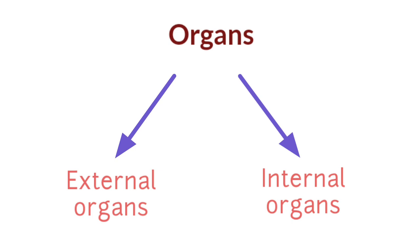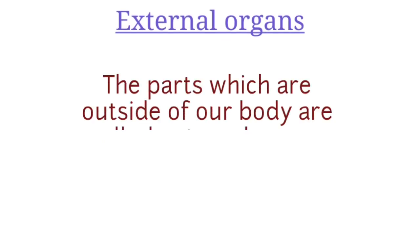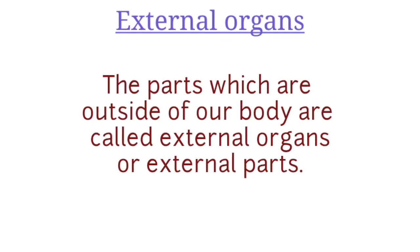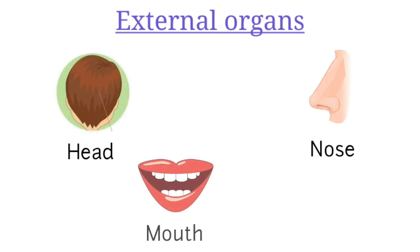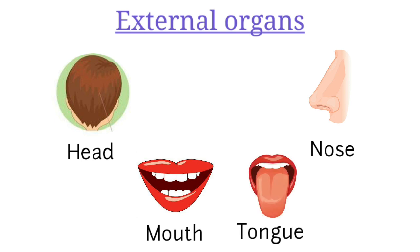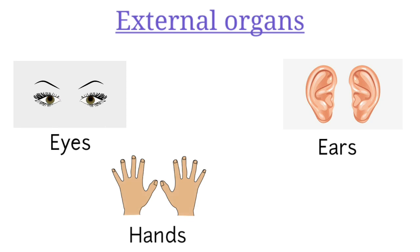Tell me children, what are external organs? The parts which are outside of our body are called external organs, or we can say external parts. Some of them are single and some of them are in pairs. Such as head, nose, mouth, tongue are single in number. And our eyes, ears, hands, legs are in pairs.